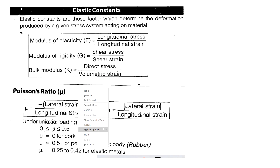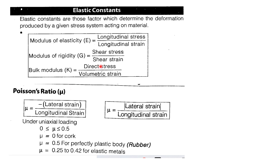Young's modulus is the ratio of longitudinal stress to longitudinal strain. Modulus of rigidity is shear stress by shear strain. Bulk modulus is direct stress by volumetric strain. Poisson's ratio is the ratio of lateral strain to longitudinal strain.